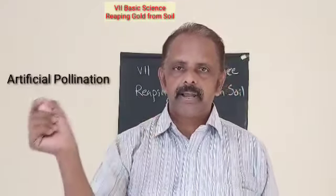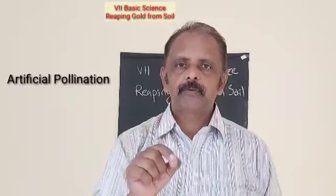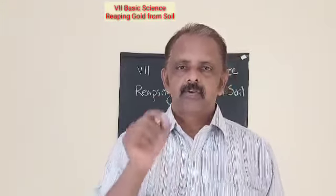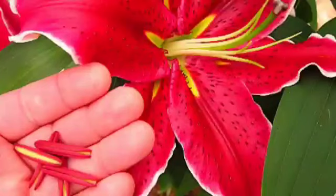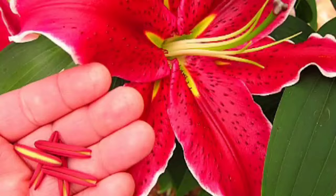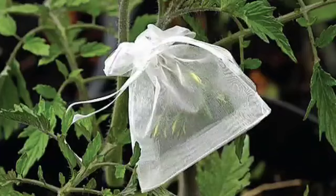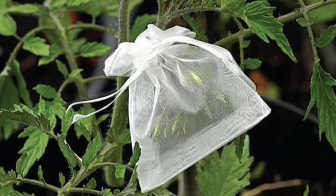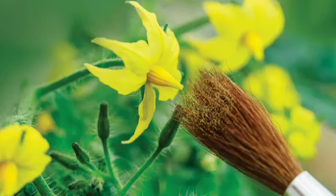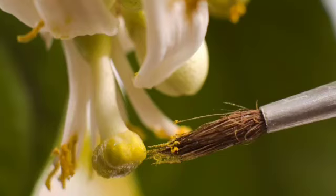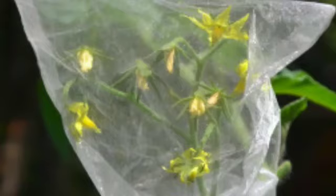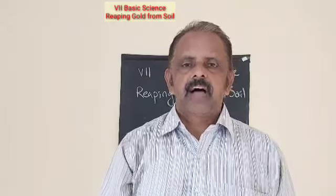To ensure this, we prevent natural pollination and do the pollination in our own way — this is called artificial pollination. First we have to prevent self-pollination by removing all stamens from the flower. Then we cover it using a polythene sheet to prevent cross-pollination by insects. We collect pollen grains from one variety and place them on the stigma of the other variety, then cover it again.